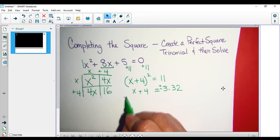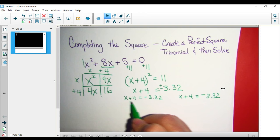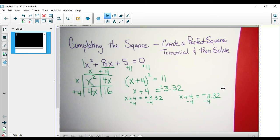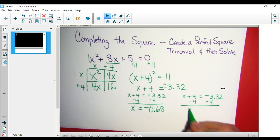So x plus 4 equals negative 3.32. Subtract 4 from both sides. I said that wrong initially. So x is equal to negative 0.68 and x is negative 7.32.